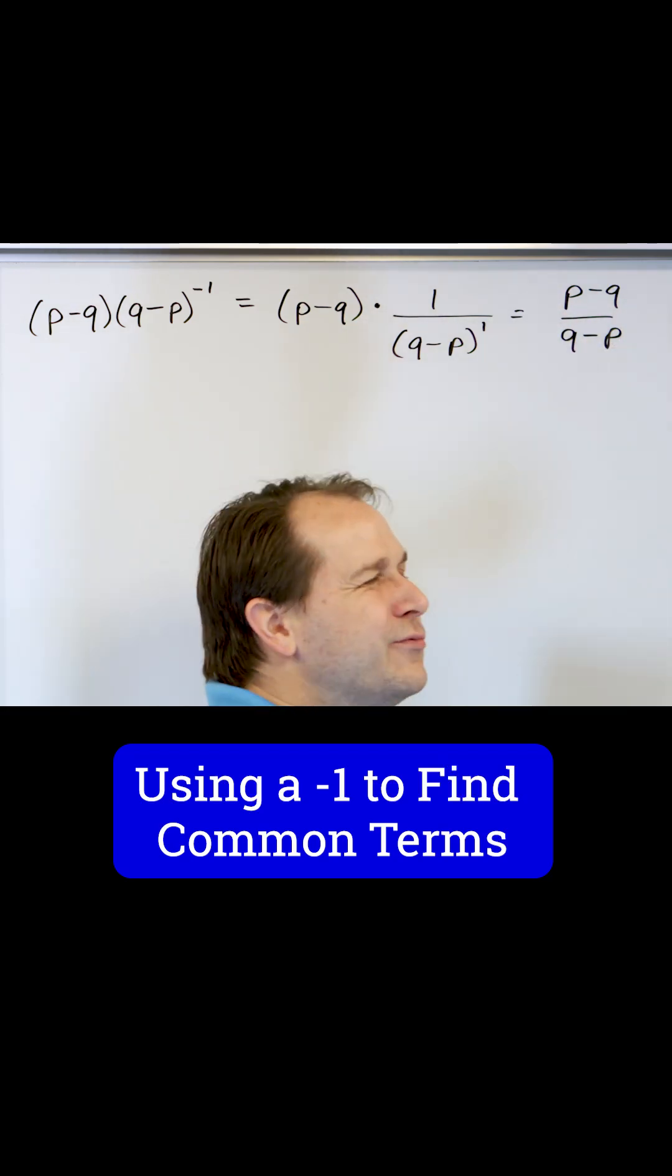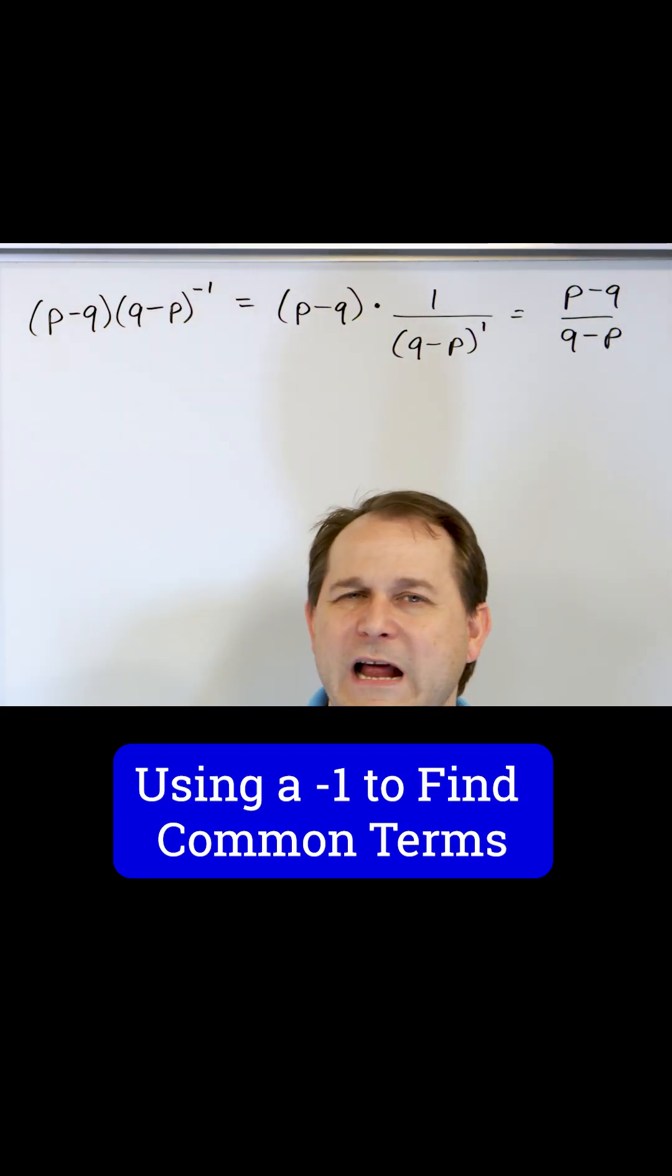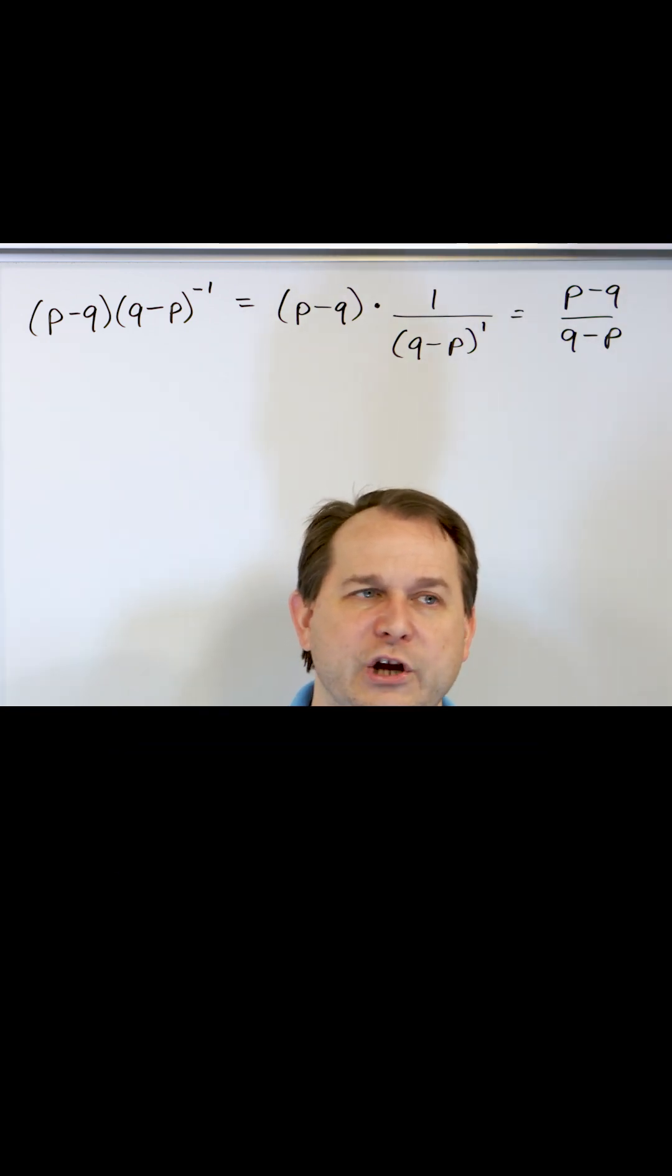So this is P minus Q, this is Q minus P. Don't they sound really similar? I mean, obviously you can't just strike through them because P minus Q is different than Q minus P, just like 2 minus 3 is different than 3 minus 2.